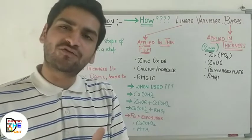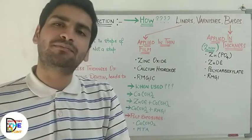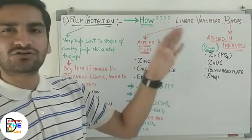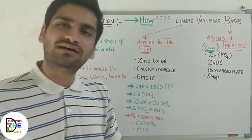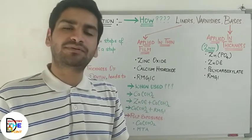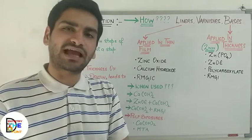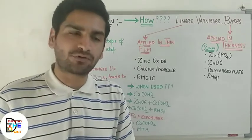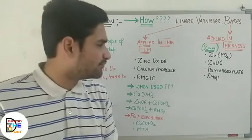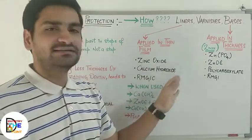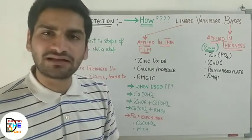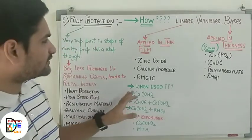If you are away from the pulp by one to two mm or more, there is no need to apply liners or bases and you can directly proceed with the restorative material. But if you are close to the pulp — only 0.5 mm of dentine remaining — and you are about to expose the pulp or there is going to be injury to the pulp, then you have to take into consideration the use of liners and bases. The first material to discuss is calcium hydroxide, which can be used as both a liner and a base.